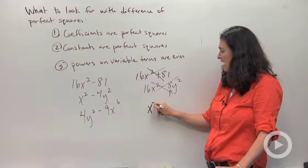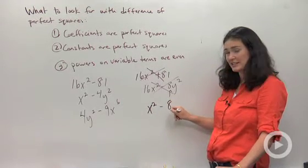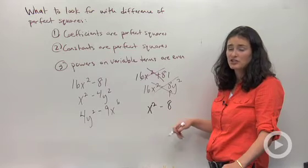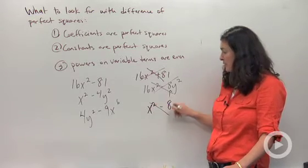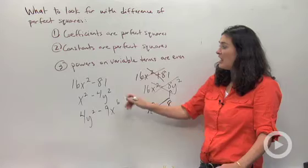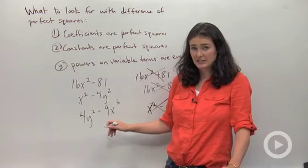Here's one more that's not a difference of perfect squares because I have that 8 again. 8 as a coefficient or as a constant is not a perfect square, so it doesn't count. These guys are differences of perfect squares.